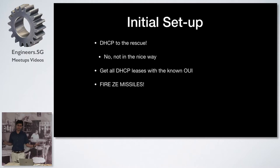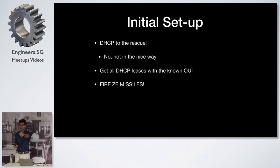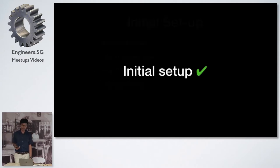So what do we do? DHCP to the rescue — except not by sending good options. I look at the DHCP server logs and go: is that a clock? That's a clock. Configure it. And you do that for every single clock you see. It's kind of annoying, but it works. Initial setup fixed.